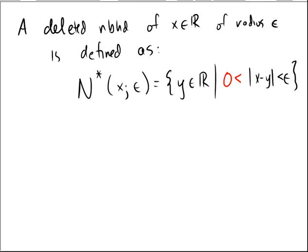Now, a deleted neighborhood of x in R, of radius epsilon, is defined as the set of y in R, such that the distance of y from x is less than epsilon, but is also bigger than 0. So it has to be a positive distance away.